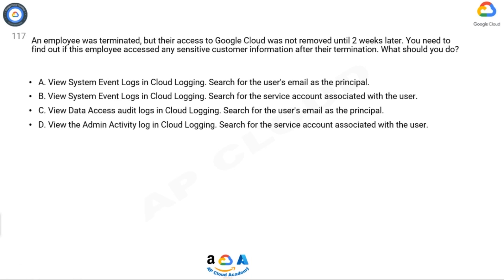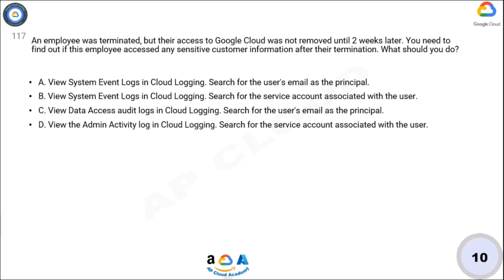A) View system event logs in Cloud Logging, search for the user's email as the principal. B) View system event logs in Cloud Logging, search for the service account associated with the user. C) View data access audit logs in Cloud Logging, search for the user's email as the principal. D) View the admin activity log in Cloud Logging, search for the service account associated with the user. Now take 10 seconds to think about the answer.